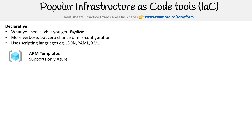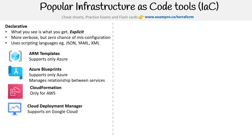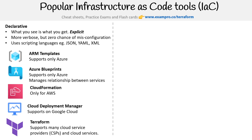For Azure, we have ARM templates and Azure Blueprints. For AWS, we have CloudFormation. For Google, we have Cloud Deployment Manager. And there is, of course, Terraform, which supports many cloud service providers such as AWS, Azure, GCP, Kubernetes, and a lot more. But these are all in the declarative category.